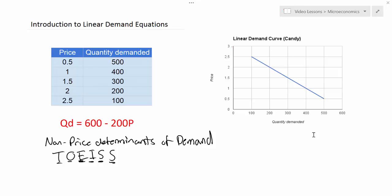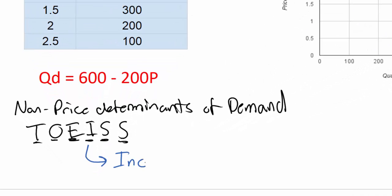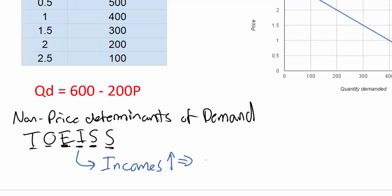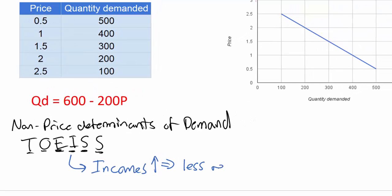Let's do one more scenario before we wrap up this big lesson on linear demand equations. Let's assume that consumers' incomes rise — that's our I in TOAS. The assumption here is that higher incomes mean that consumers of ice cream become less responsive to a change in the price of ice cream. However, the autonomous level of demand, or the Q intercept, does not change.